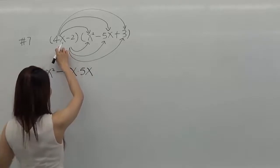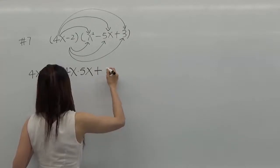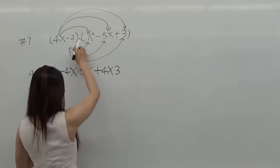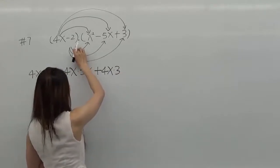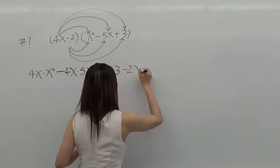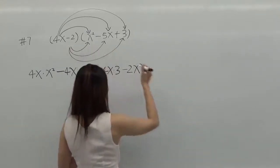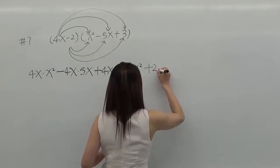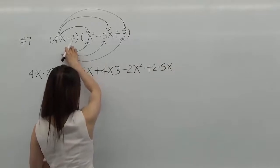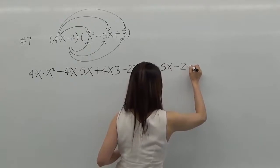The last term for 4x and 3: it will be positive, positive, so it will be positive. Second term in the first expression: it will be negative, positive, so it will be negative 2 times x squared. Negative, negative — it will be positive: 2 times 5x. The last one is negative 2 and 3, so negative 2 times 3.